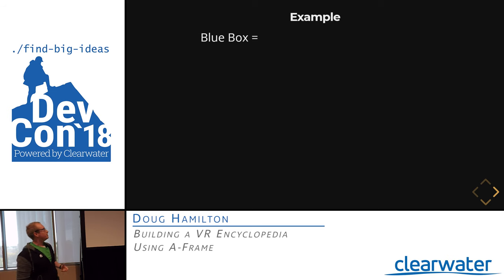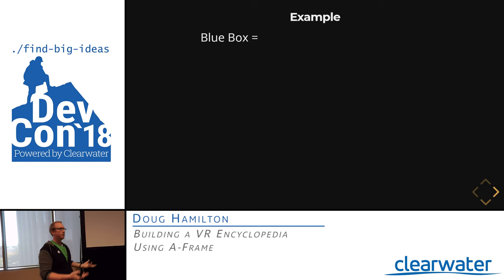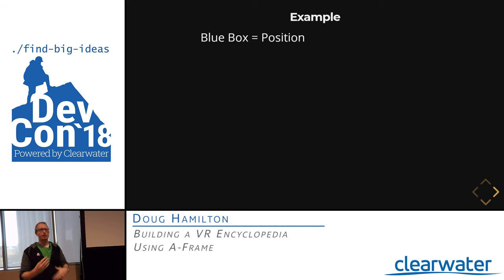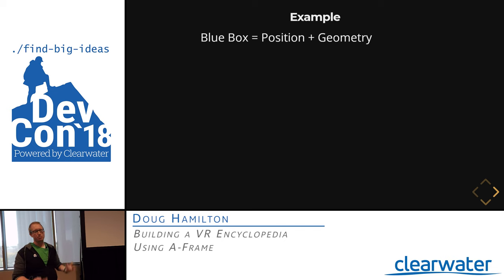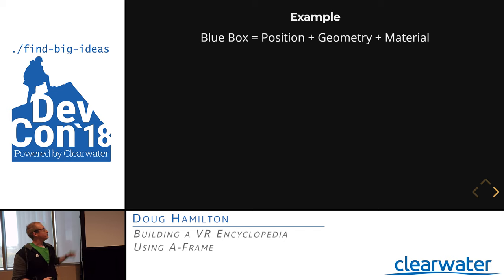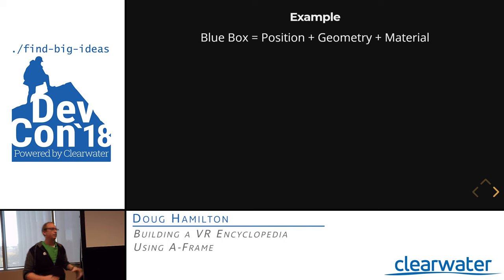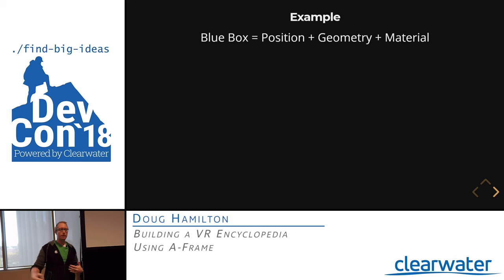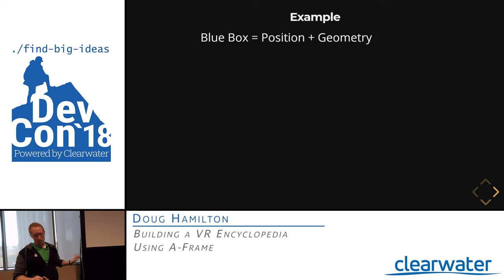For example, to add a blue box to a game: an entity by itself does nothing. We add a position component to place it in the world, a geometry component with primitive set to box, and a material component with color set to blue. We just pull components off the shelf and plug them together. It's also important that you can add and remove components over the entity's lifetime — if we didn't want the blue box to be blue, we'd remove the material component and could add it back later.